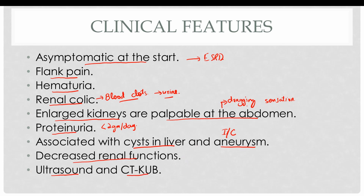Certain accelerating factors increase progression to end-stage renal disease. These include ethnicity — the disease progresses more quickly in the Black population — association with sickle cell trait, and hypertension. Notably, 40 percent of adult polycystic kidney disease cases have cystic lesions in the liver.